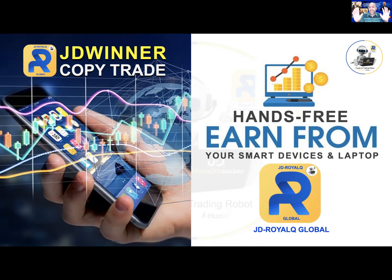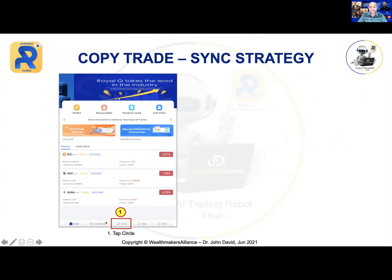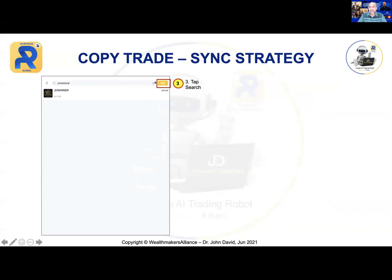This is important — this is going to take away a lot of your time burden, and the robot will do it 100% automatically. That's why I call it hands-free. What you need to do is sync the strategy. First, go to your application and find Circle. At the top, use the search bar and enter JD Winner. Once you enter JD Winner, you will see a yellow button — in Chinese that means 'search' — just tap search.